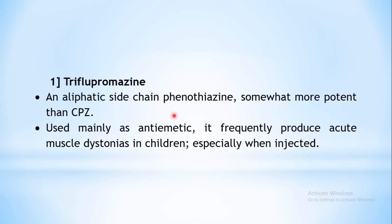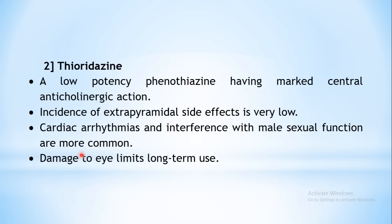A disadvantage of trichlorpromazine is that it produces acute muscle dystonia, especially in children. Muscle dystonia is involuntary contraction of skeletal muscles. These are motor side effects, collectively known as extrapyramidal side effects. Muscle dystonia is precipitated specifically in children, especially when injected — so as far as possible avoid injection of these drugs in small children.